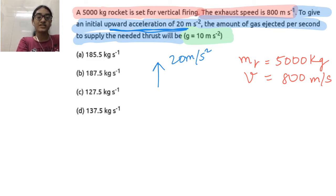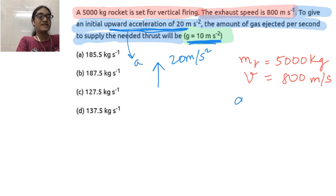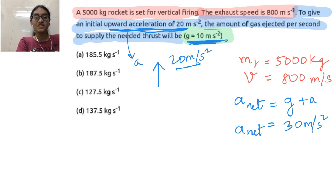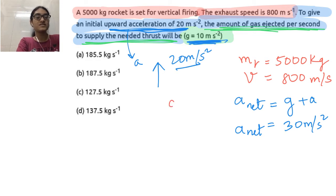The rocket is accelerating upwards with 20 meter per second square. But net acceleration - can I say the acceleration due to gravity is G? Upward acceleration is A and we also have G. So net acceleration going upwards is G plus A, which gives A net equal to 30 meter per second square.